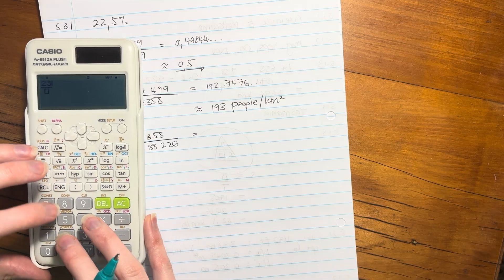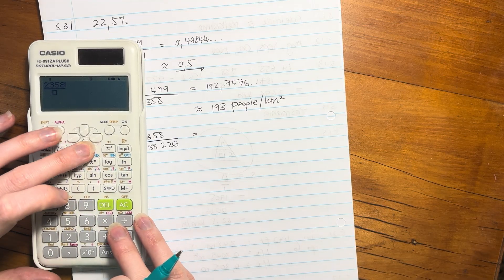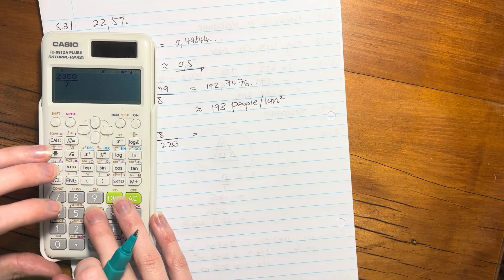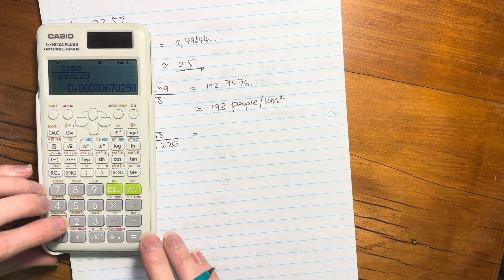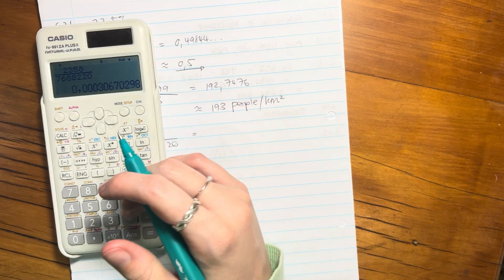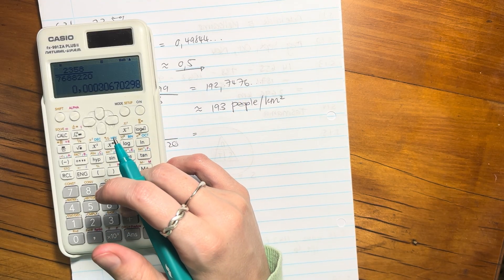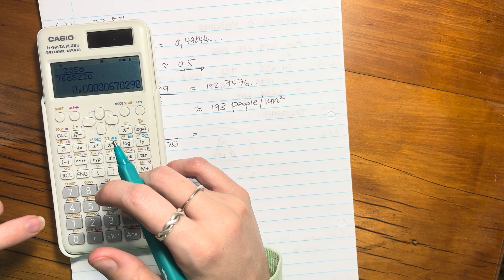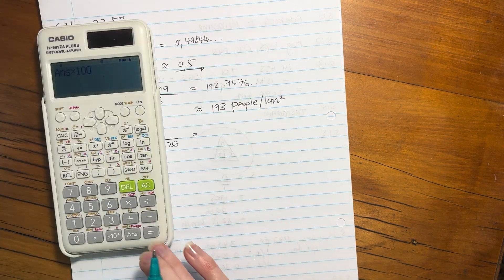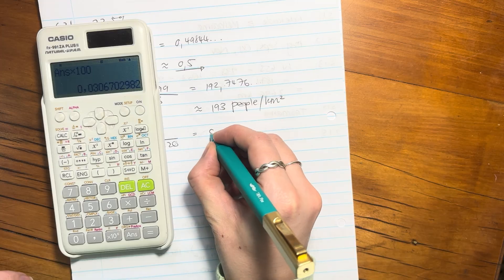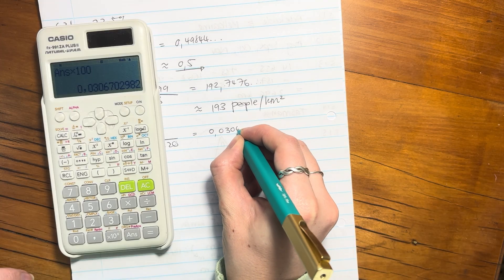So let's pop that in and see what we get. 2,358 over 7,688,220. And then we want a percentage, right? That's quite useful to put a percentage because the question specifically said, why this area is omitted from the percentages. So let's see what the percentage is. So the percentage is this.